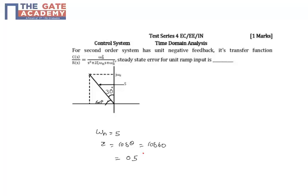The transfer function given to us is a closed loop transfer function for a second order system. To find the steady state error for a unit ramp input, we need K_v, and the inverse of K_v is the steady state error. To find K_v, we need the open loop transfer function, but in the question we are provided with the closed loop transfer function.